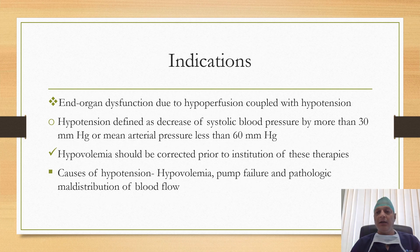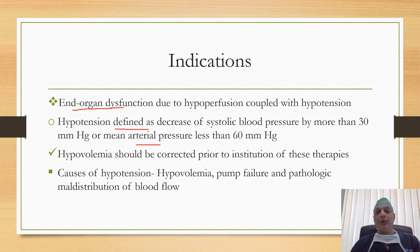What are the indications of these agents? These agents should be used when there is presence of end-organ dysfunction due to hypoperfusion and it is coupled with hypotension. Hypotension is defined as decrease of the systolic blood pressure by more than 30 from the baseline and mean arterial pressure less than 60. It is important to remember that hypovolemia should be corrected prior to administration of these therapies.